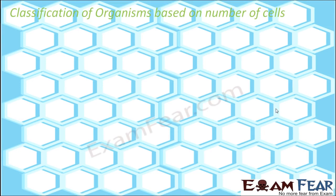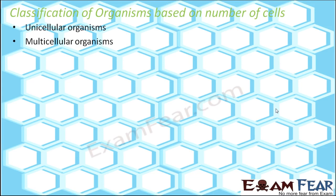Now we will look at the classification of organisms based on the number of cells. How many cells are present inside the body of a living organism? Based on the number of cells, organisms are divided into two categories: unicellular organisms and multicellular organisms.